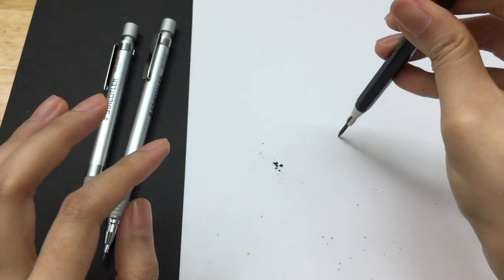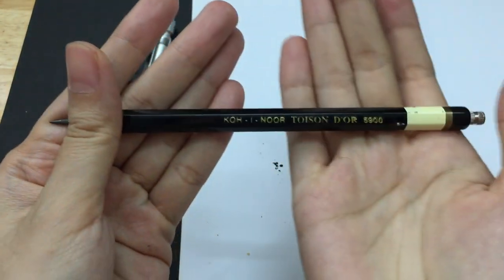This one is a lead holder, quickly show you. This is the Koh-I-Noor torsion.